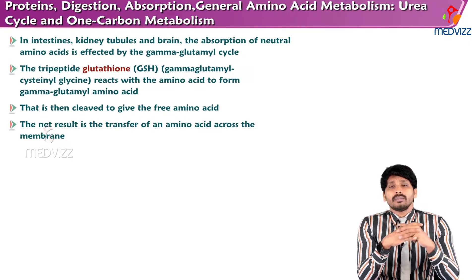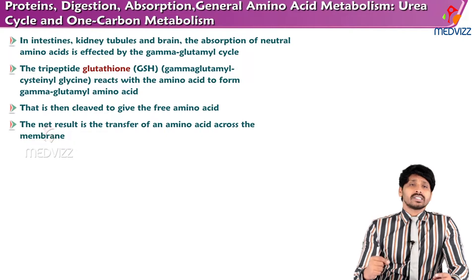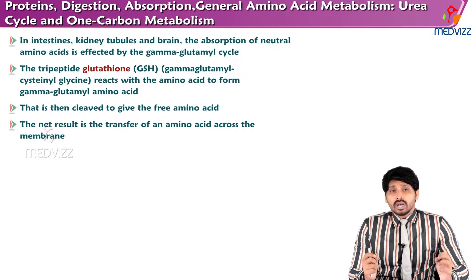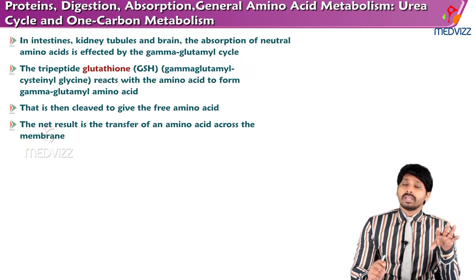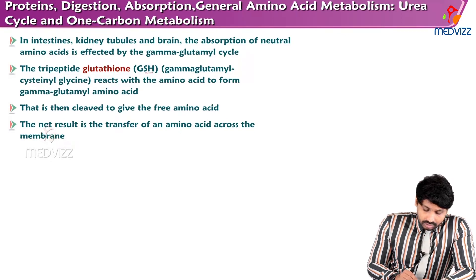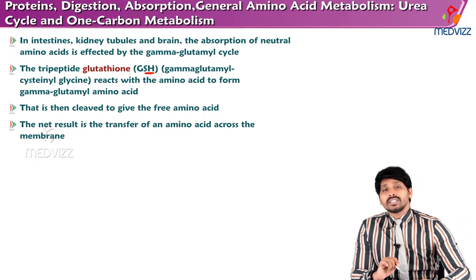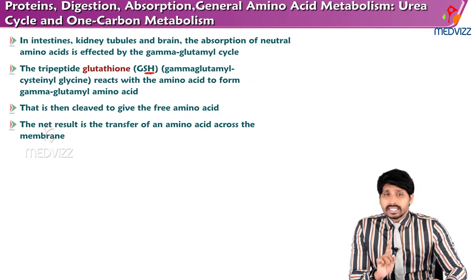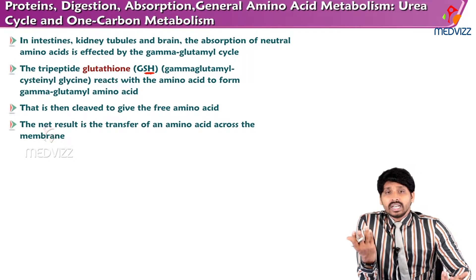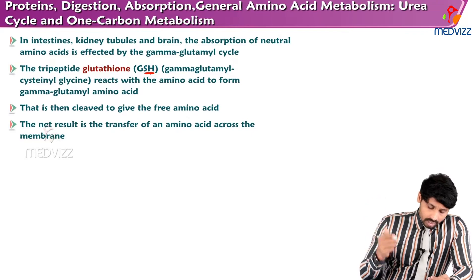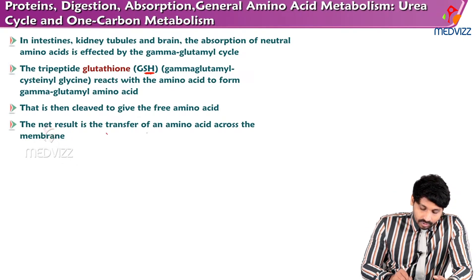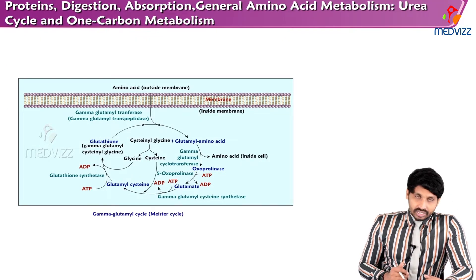This reabsorption is accomplished by the gamma-glutamyl cycle, also called the Meister cycle. The main tripeptide involved is glutathione — chemically named gamma-glutamyl cysteinylglycine. It is a tripeptide because it contains glutamic acid, cysteine, and glycine all in linkage. Glutathione is represented as GSH, where SH represents the sulfhydryl group, indicating the presence of cysteine. The net result of the Meister cycle is transfer of amino acid across the membrane.